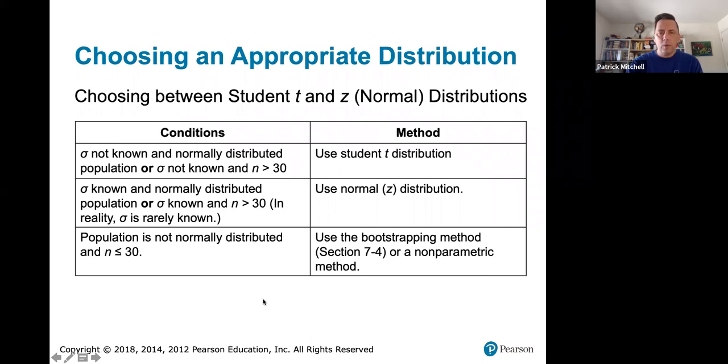So we will end with just a summary of what to do in which situation. If sigma is unknown and you have either a normally distributed population or n is greater than 30, you use the t distribution. If sigma is known, you use the standard normal distribution. And we will not deal with the case where the population is not normally distributed and you have small samples. That is the end of section 7.2. Thank you.